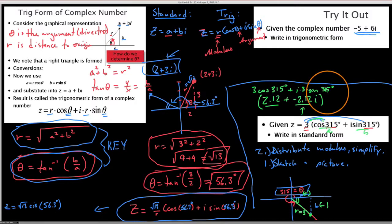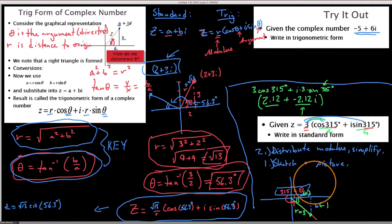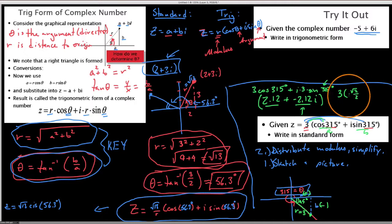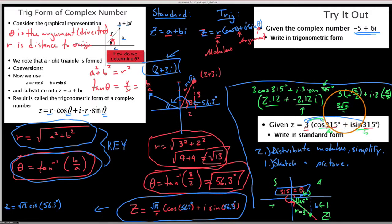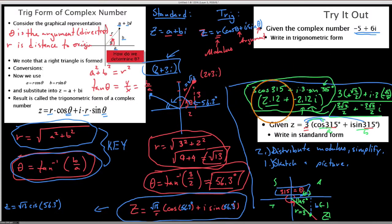We can also do this with exact values. With a 45 degree reference angle: 3 times cosine of 315 equals 3 times root 2 over 2, which is positive since cosine is positive in the fourth quadrant. And i times 3 times sine of 315 equals i times negative root 2 over 2 times 3, giving us 3 root 2 over 2 minus 3 root 2 over 2 times i. This is the same number in standard form, converted back from trig form.